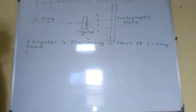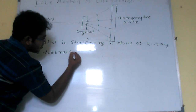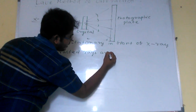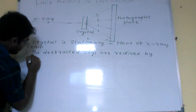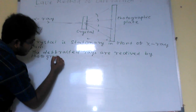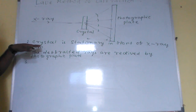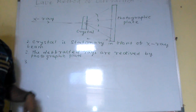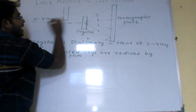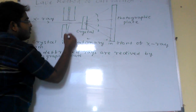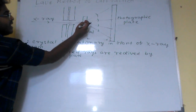The diffracted rays are received by the photographic plate. In order to get a clear diffraction pattern, what we do in this new method is we allow the x-ray to pass through a narrowing slit arrangement before falling on the crystal.